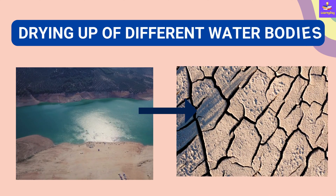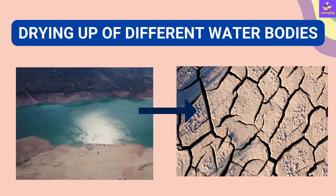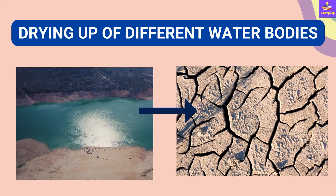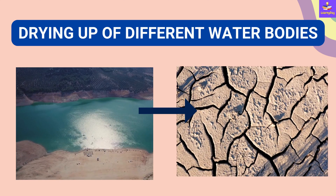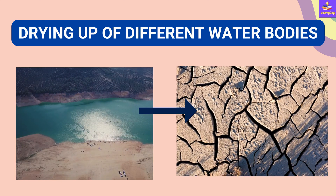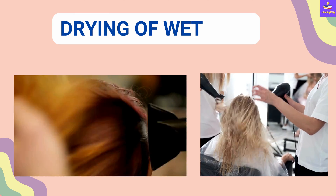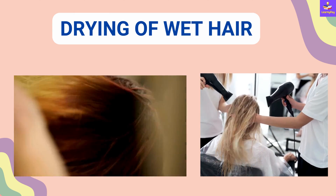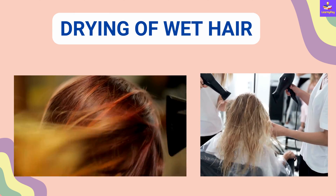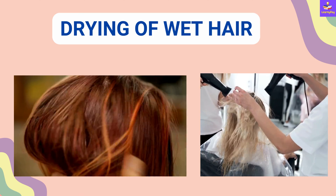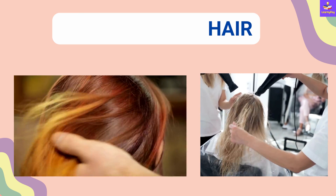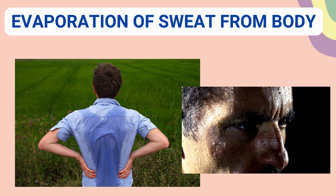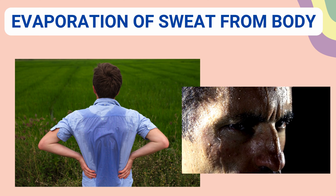Drying up of different water bodies also occurs because of evaporation — the water in them evaporates because of the excessive heat of the Sun. When our hair is wet and we leave it for some time, or dry it with a hairdryer, that is another example of evaporation.